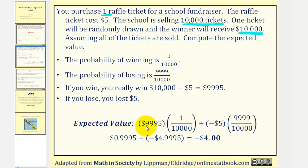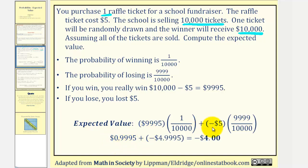If we win, we win $9,995. If we lose, we lose $5. We find each product and then sum them to get the expected value. $9,995 times 1/10,000 equals $0.9995, and negative $5 times 9,999/10,000 equals negative $4.9995. The sum of these is negative $4.00. That is our expected value.